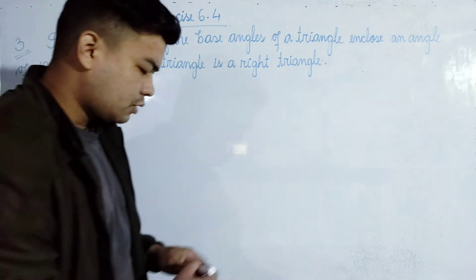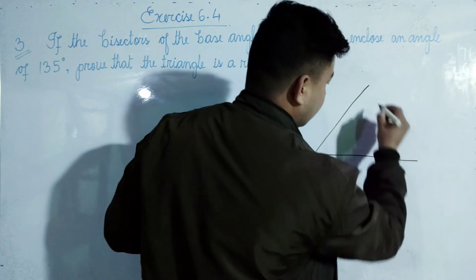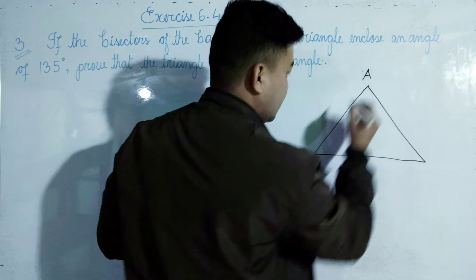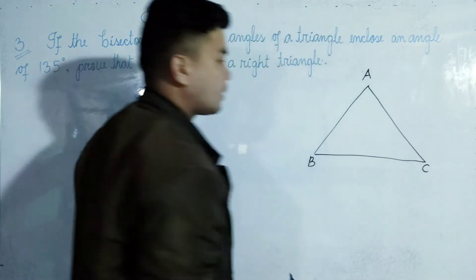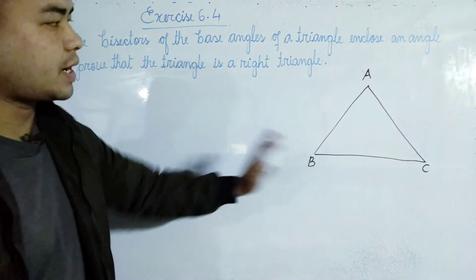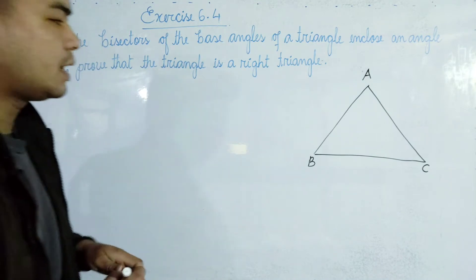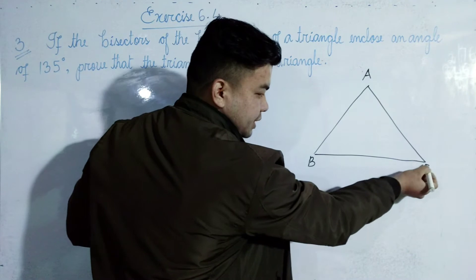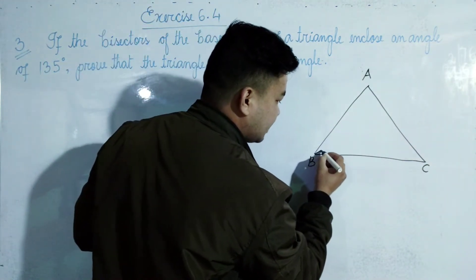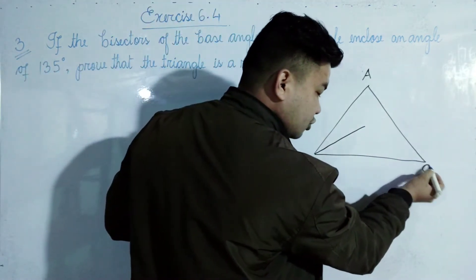So this is the method to define the symbol. The triangle elements are A, B, C. This is the bisector. The base angle is the bisector — it is the base angle.